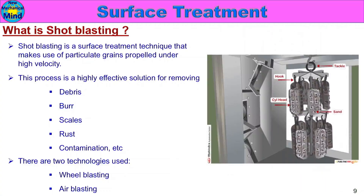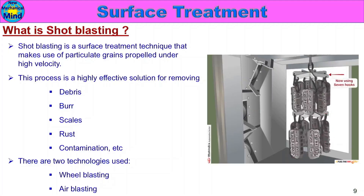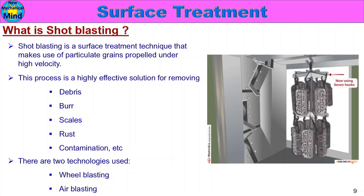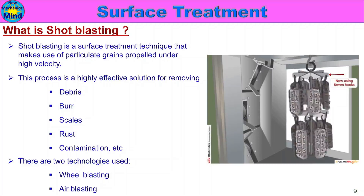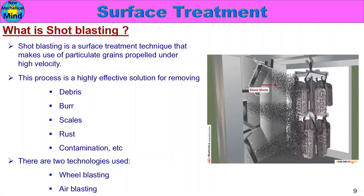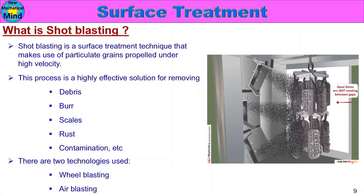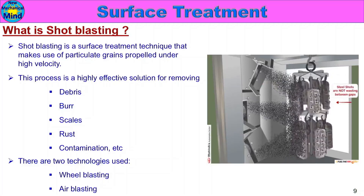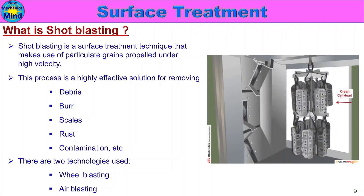Here is an example using a cylinder head. When die casting is performed, sand remains on the part. Using the wheel blasting method, the cylinder head is placed in the machine. After processing, the cylinder head is cleaned up — the sand is removed. This is how shot blasting is done.